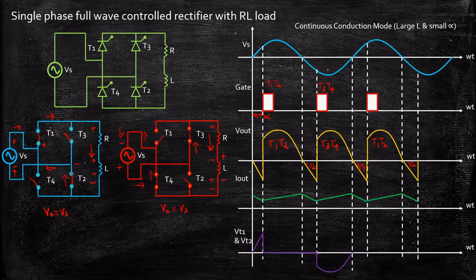The cycle then repeats: you get a peak following the supply voltage waveform, and when T1 and T2 are turned on again, the voltage goes back to zero. This is how you need to understand and analyze the voltage waveform across the thyristors.